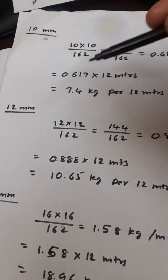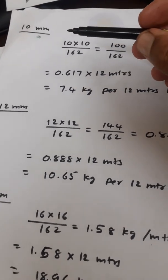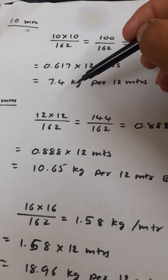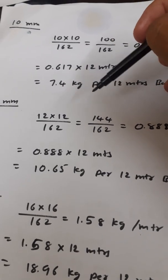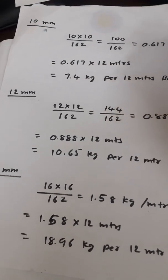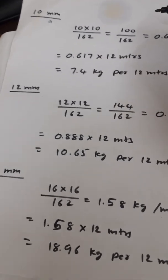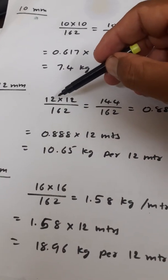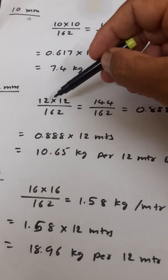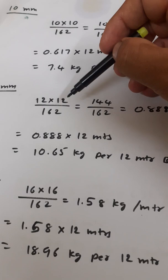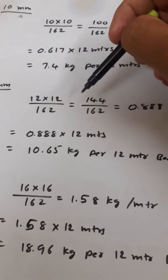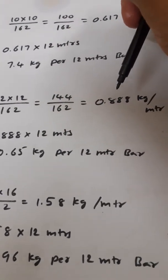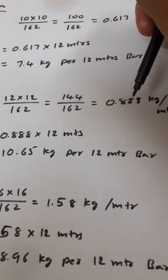The number of 10mm bars we need to buy, multiplied by 7.4 kg, gives the total weight of 10mm bars. For 12mm, D squared is 12 × 12 divided by 162, which is 144 divided by 162.